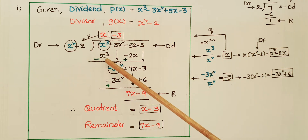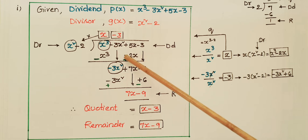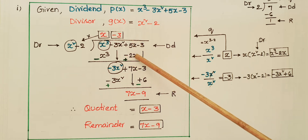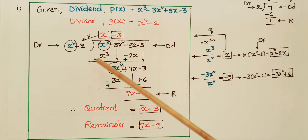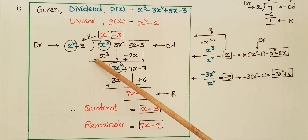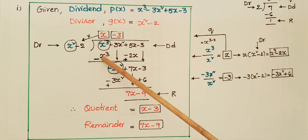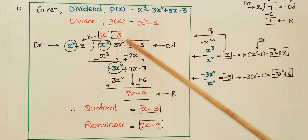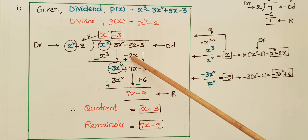Write x³ - 2x here. There is no x² term, so account for that. Now subtract these terms from the dividend by changing the signs: minus x³ becomes plus, and -2x becomes +2x. So x³ - x³ = 0, and bring down -3x².